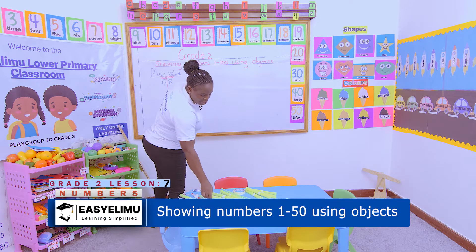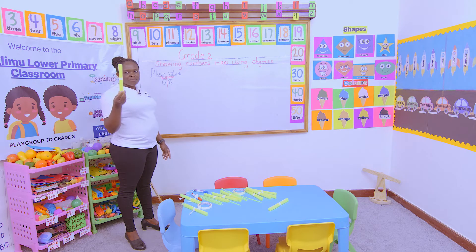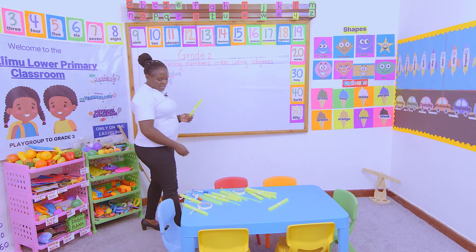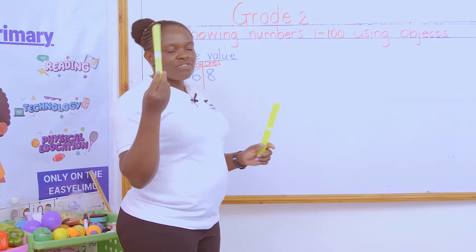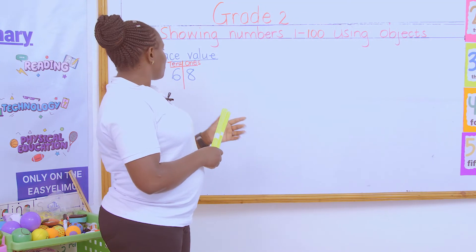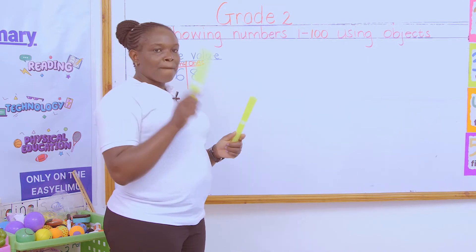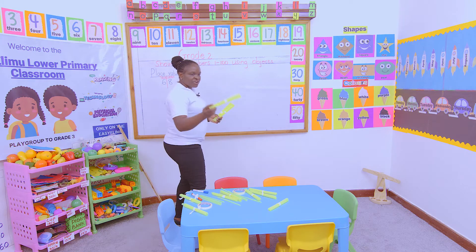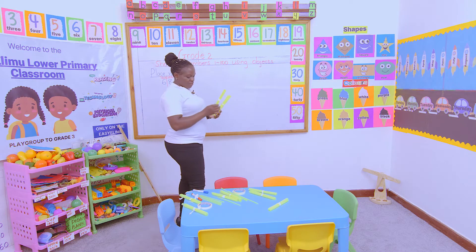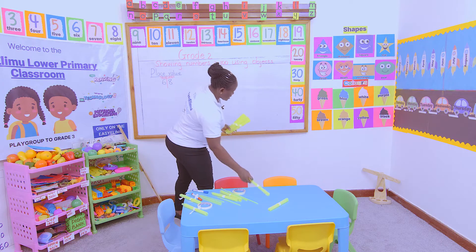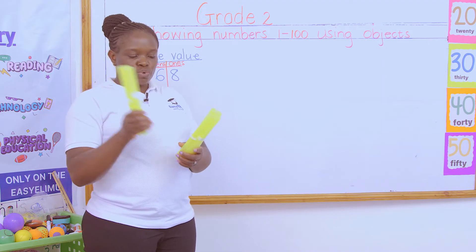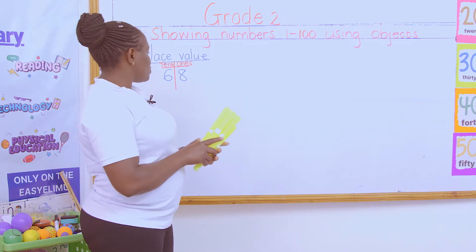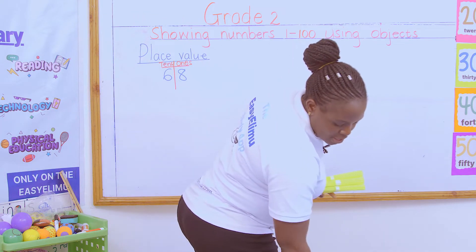Once you get that, it becomes very easy to show the number. This bundle represents 10 sticks — one bundle of 10 sticks. Another bundle is also 10 sticks. So I am looking for six bundles of 10 sticks. I'll count: one, two, three, four, five, six. And how many ones? We are talking about eight single straws.